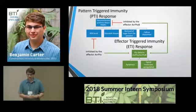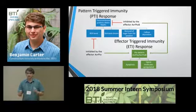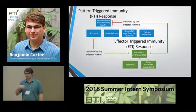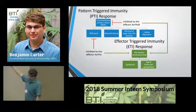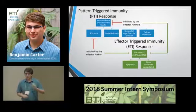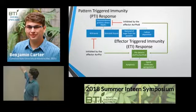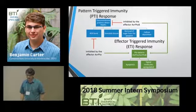Plant immune responses have two pathways through which they function: pattern triggered immunity, or PTI, and effector triggered immunity, or ETI. PTI is the first line of defense where transmembrane proteins detect the presence of pathogen associated molecular patterns, or PAMPs. These include things like flagellum or cold shock protein. PTI responses are numerous and broadly applicable across pathogens, but they are only moderate in the strength of their response. Bacteria have evolved to bypass PTI systems using proteins called effectors, which interfere with PTI proteins and bypass the immune response.